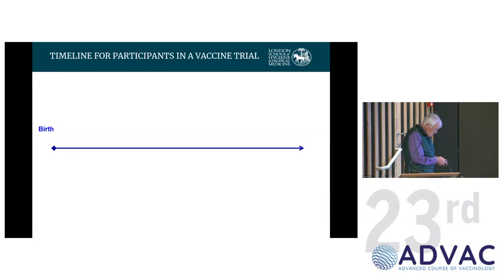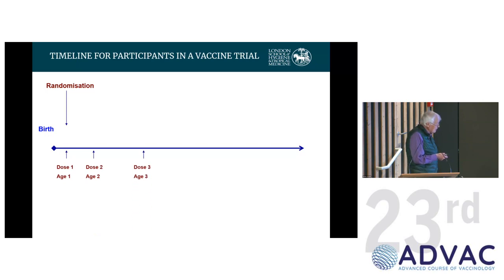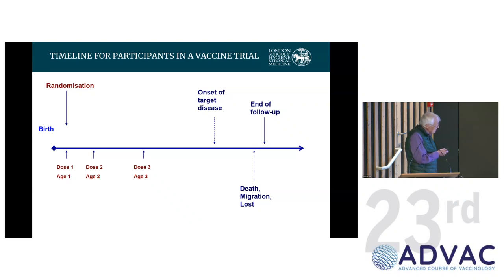In a typical vaccine trial, a participant gets recruited and randomised — say to vaccine or placebo — gets their first dose, then their second dose, then their third dose. They're all followed up to some end-of-follow-up date. In between, they may die, migrate, get lost, or develop the target disease. Those are the critical events in a trial for a three-dose vaccine. You need to define an end date for the trial and not include events that occur after that date.